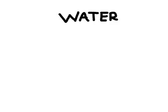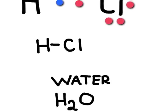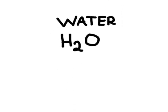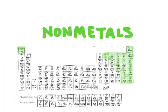Let's look at another example: water. Water's chemical formula is H₂O, meaning it has two hydrogens and one oxygen. We're going to draw the structural formula for water, just like we did for HCl with the symbols and the dash. Let's first look at the valence electrons in these two elements. Oxygen is in group six on the periodic table, so it has six valence electrons, and hydrogen once again has one valence electron.